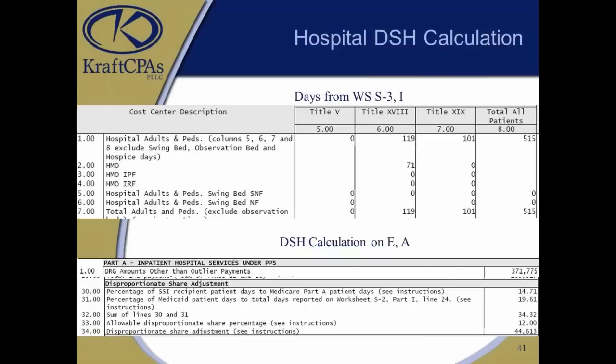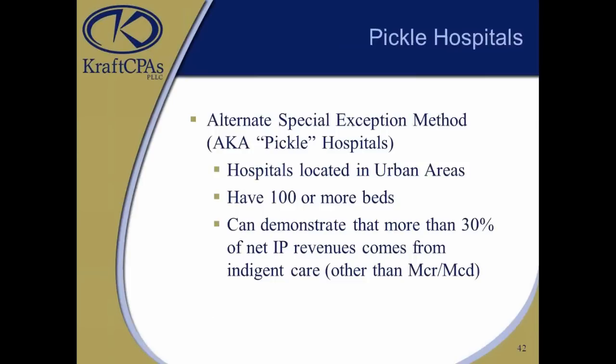Going through the DSH calculation: the top part of slide 41 shows your days off Worksheet S3 Part 1 and how that flows through to your Medicaid portion of the percentage to give you your disproportionate share reimbursement, reported on line 34 of Worksheet E Part A. Just quickly, the Pickle Hospital method — the non-standard method most hospitals won't qualify for — is strictly for urban hospitals with more than 100 beds where more than 30% of revenue comes from other indigent sources. In that case, the DSH adjustment factor is 35%, which is very high.